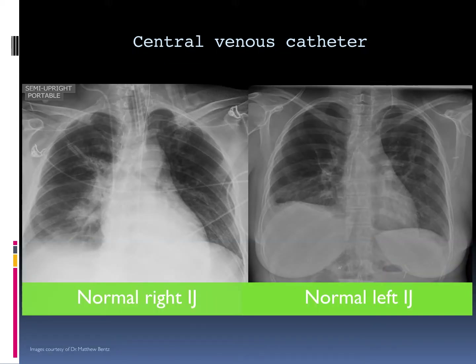These are two cases with two normally positioned central venous catheters, both approaching from an internal jugular vein. The radiograph to your left is a normal right internal jugular vein. The radiograph to your right is a normal left internal jugular vein. Notice how the right internal jugular venous catheter courses downward to the level of the cavoatrial junction,